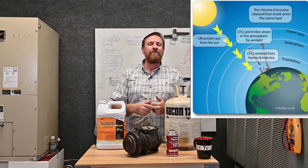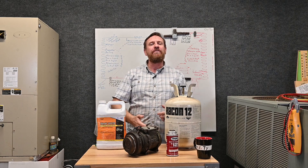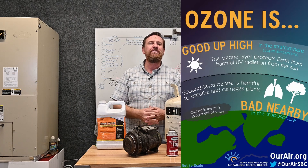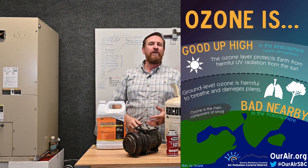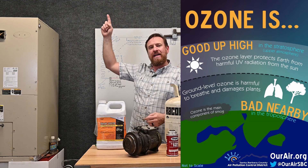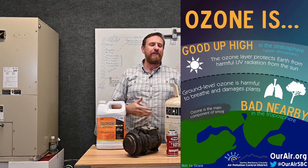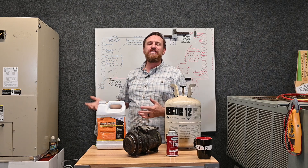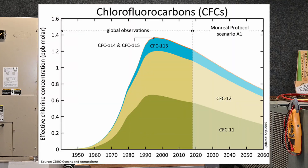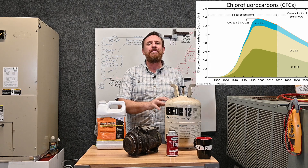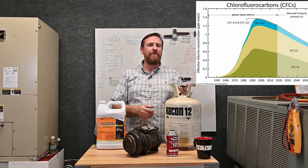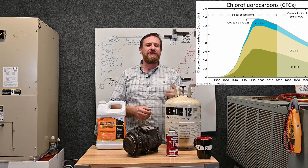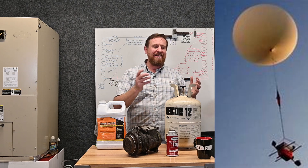It doesn't stop there. As that cycle continues, it ends up coming back down to the earth level and creates ozone at a lower earth level. Ozone is also called smog, so the EPA says ozone is good up high and bad nearby. The chlorine molecule is the key. It's different from the chlorine that naturally occurs, such as from volcanoes. One of the differences they found is the rise of fluorine in the atmosphere also matched the rise of chlorine in the atmosphere. Since it's a chlorofluorocarbon, the fluorine levels matched the rise of chlorine, and they tied it down to R12.